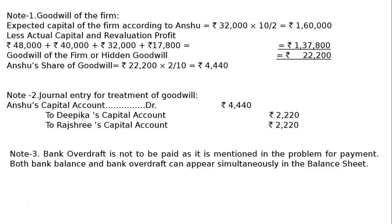Note 3: There is a bank overdraft. Bank overdraft is to be paid as mentioned — not omitted — as it is mentioned in the problem for payment. Both bank balance and bank overdraft can appear simultaneously in the balance sheet. This loan may not belong to the same bank where you have a bank balance. That is Rs. 54,000.